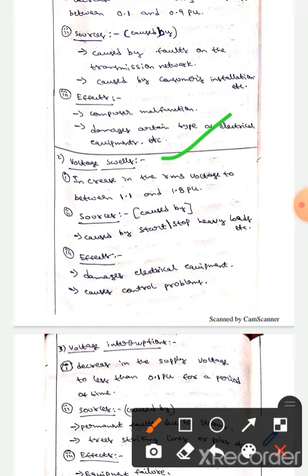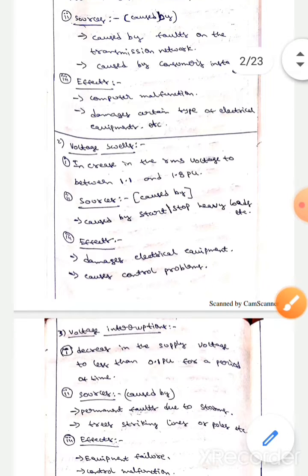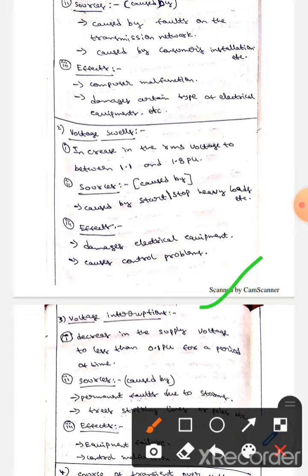The next one is voltage swells. It is an increase in the RMS voltage to between 1.1 and 1.8 pu. It is usually caused by starting or stopping heavy loads. The effects due to voltage swells are damage of electrical equipment and control problems. The next one is voltage interruptions. It is a decrease in the supply voltage to 0.1 pu.